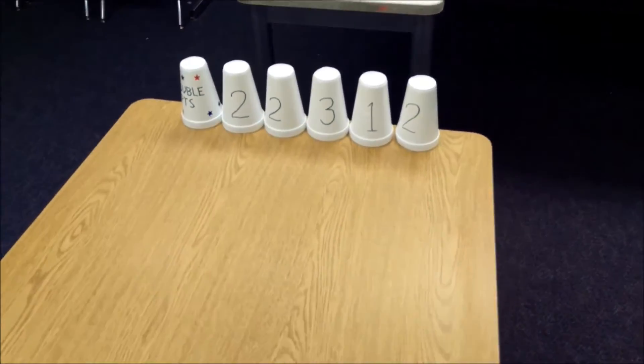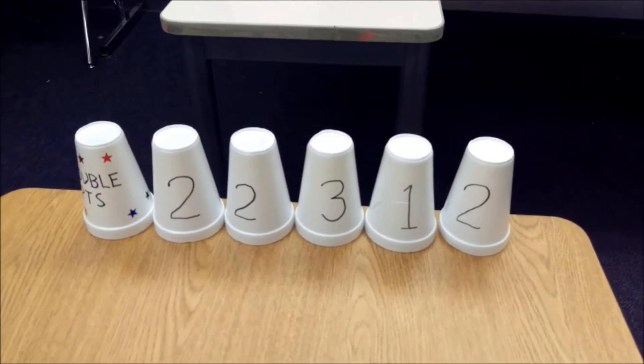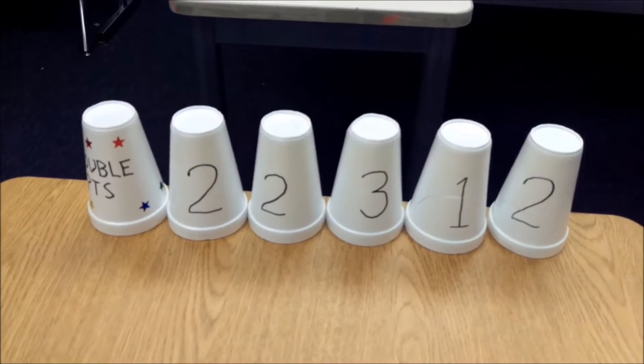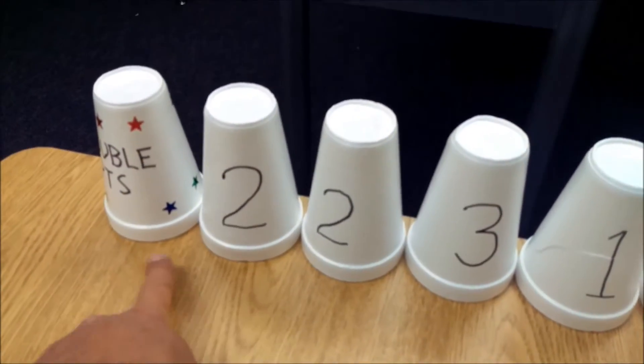And the other team will have numbered cups. I have a two, a one, a three, two twos, and then a double points cup. So if they knock over, let's say they knock over a two cup here and they knock over the double points, then they'll get four points.